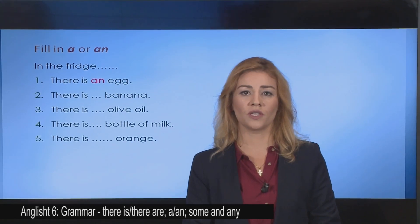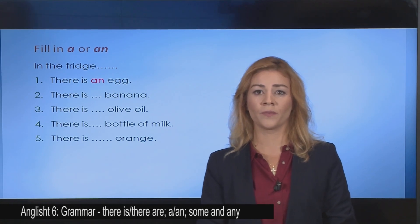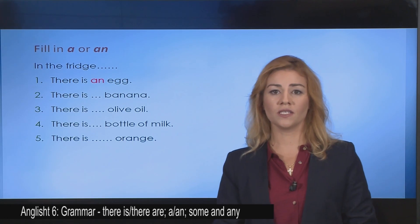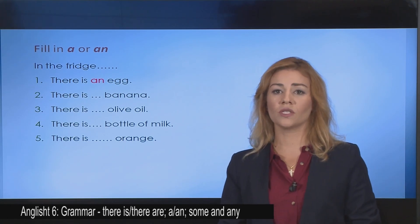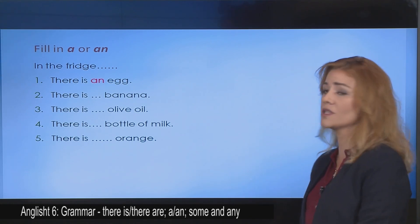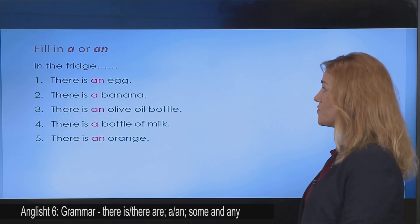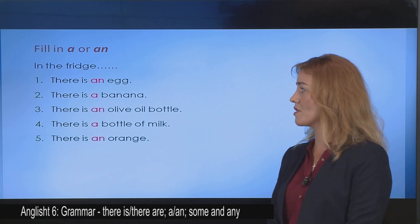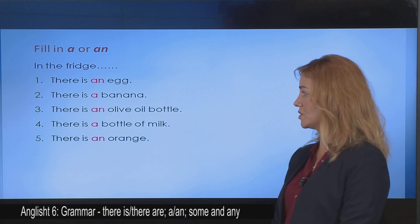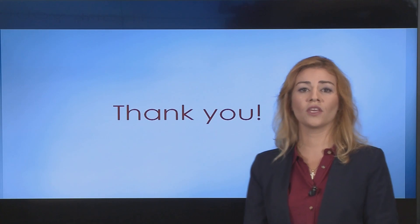Now we are going to deal with an exercise where you have to fill in the gaps with a or an. Attention: we use a before consonant sounds and we use an before vowel sounds. So in the fridge there is an egg, there is a banana, there is an olive oil bottle, there is a bottle of milk, and there is an orange. And thank you for your attention.